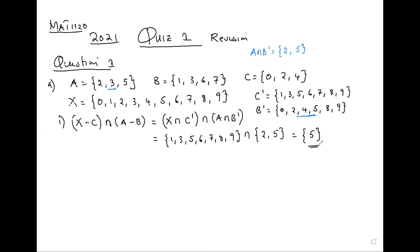So the answer is {5}. For set questions like this, always list your sets — list the complements, don't compute them in your head. After listing, start checking what is common. For intersection, check what is in both. For union, pick everything from each set.